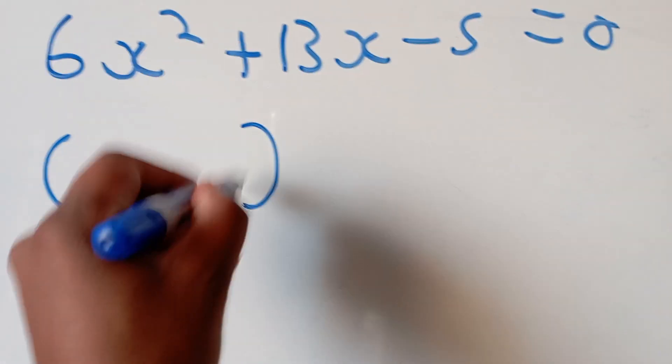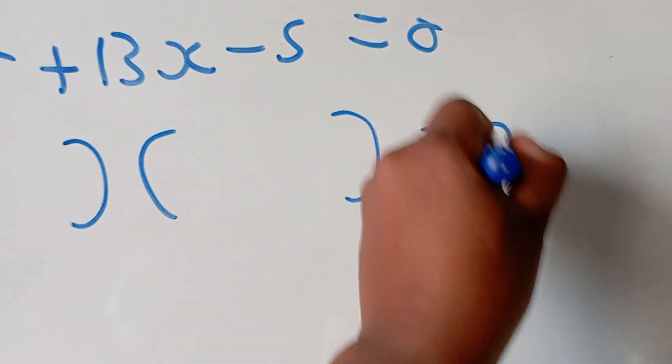This is what you simply do: you put two brackets here, then it's going to be equal to 0.